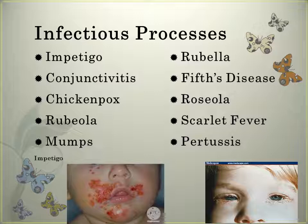Fifth disease is spread via respiratory secretions and blood. The incubation period is 4-21 days, and they don't know for sure how long the child is infectious. There is a three-stage rash. Stage 1 is erythema on the face and cheeks, gone in 1-4 days. Stage 2 is maculopapular red spots on the upper and lower extremities lasting up to a week. Stage 3 is where the rash subsides and reappears if the skin is irritated or traumatized. Aplastic anemia may occur and there may be an absent rash with aplastic anemia. Treat it symptomatically and use droplet precautions.